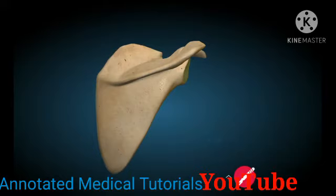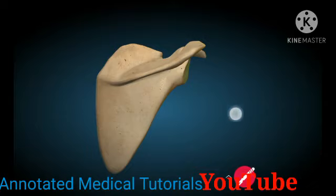We will later do the attachments of the muscles, but just to mention a few: the muscle originating from the supraspinous fossa is called the supraspinatus muscle, and that which originates on the infraspinous fossa is called the infraspinatus.